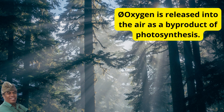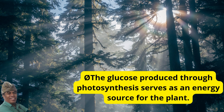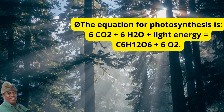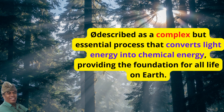Oxygen is released into the air as a byproduct of photosynthesis. The glucose produced serves as an energy source for the plant, while the oxygen produced is used in cellular respiration by the plant and other organisms to release energy. The equation for photosynthesis is: 6CO2 + 6H2O + light energy = C6H12O6 + 6O2. Photosynthesis is a complex but essential process that converts light energy into chemical energy, providing the foundation for all life on Earth.